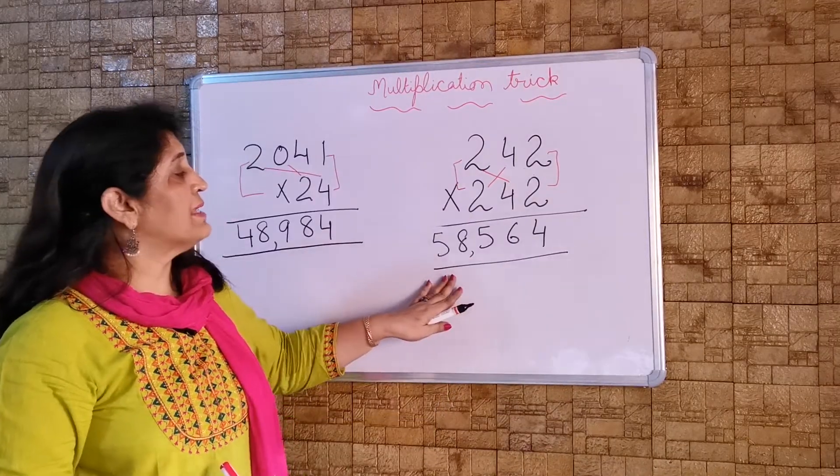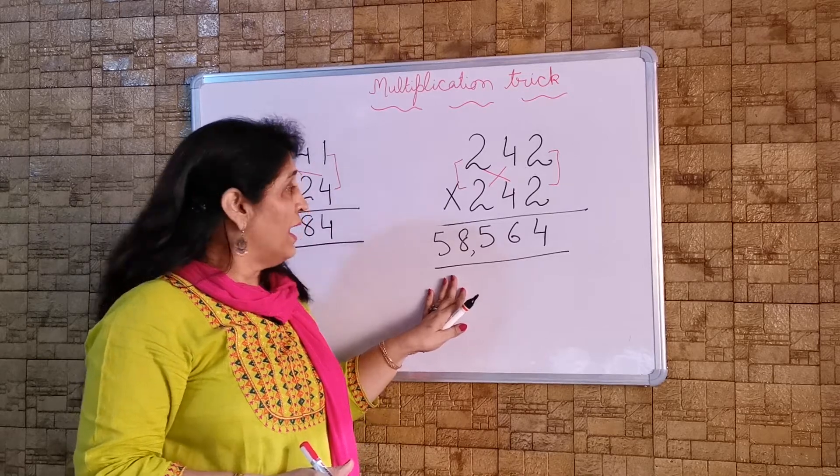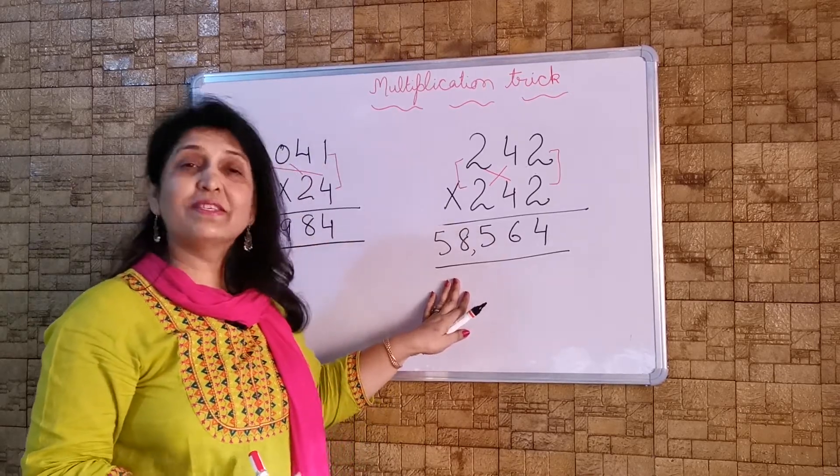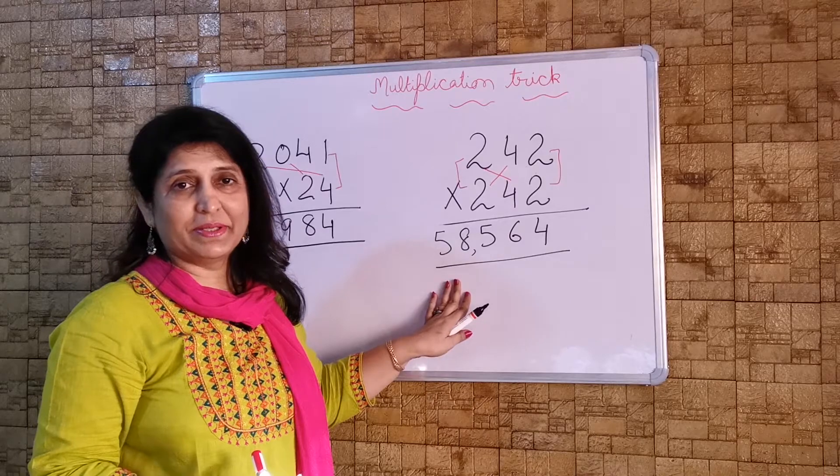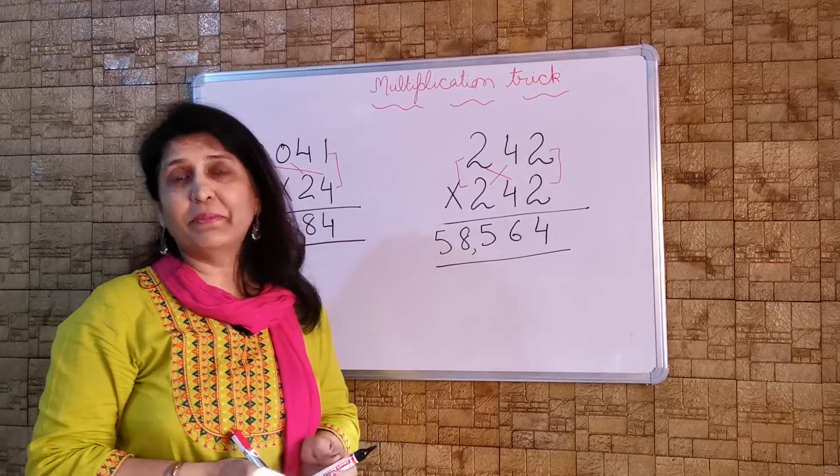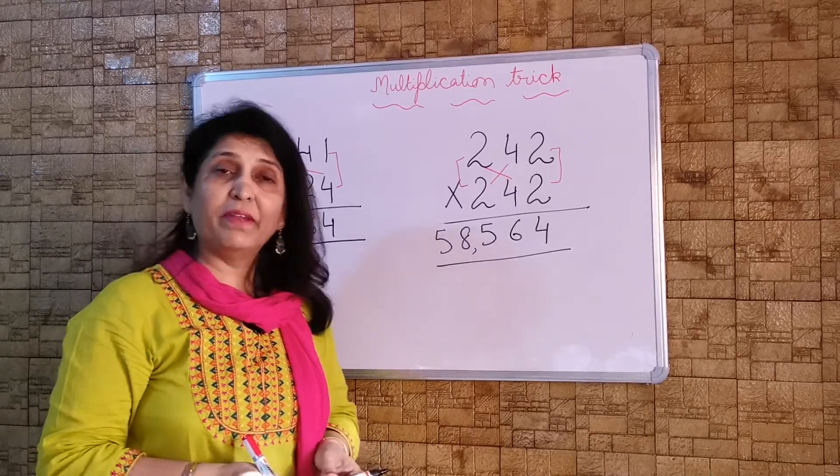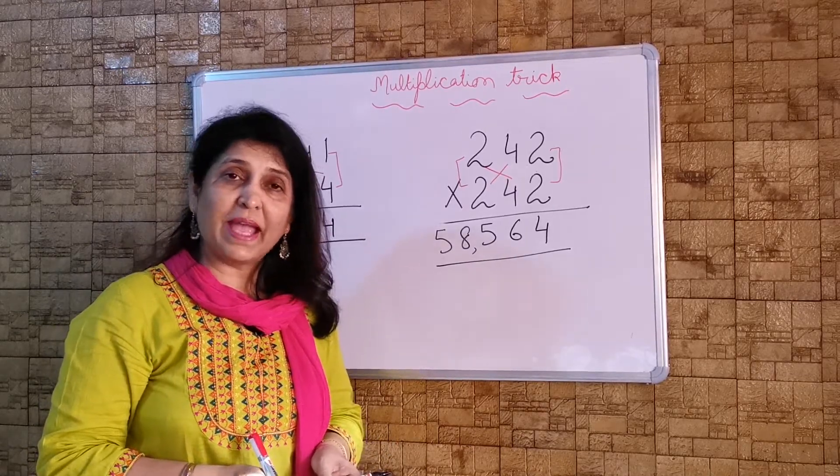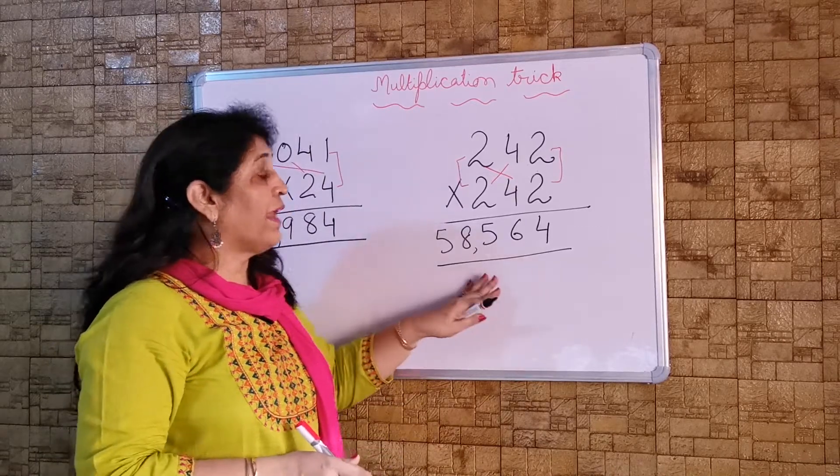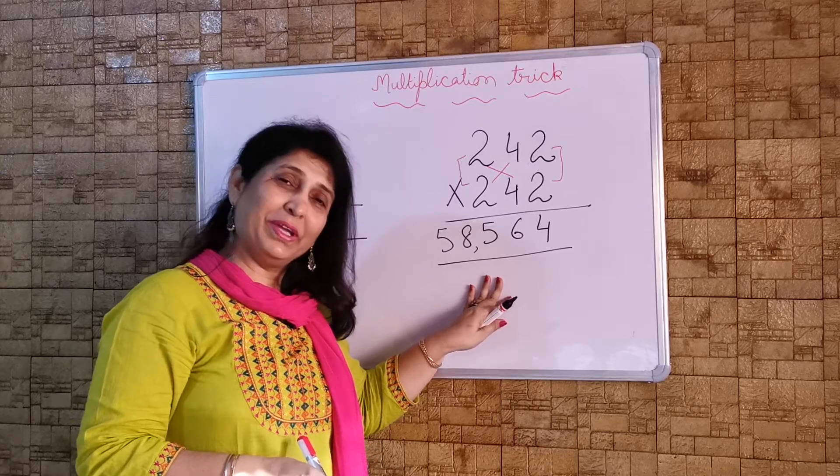So now the answer is 58,564. I can assure you this is not a magic. This is just to be tricky with the numbers. So if you learn these tricks, you will become very fast with mathematics. I hope that everybody will be practicing these kind of sums and definitely they can help you in the long run of life also. Okay, bye-bye.